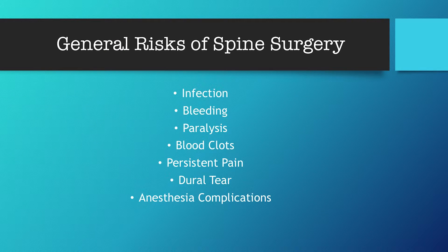First, the general risks of spine surgery. These risks are quoted within our office with Dr. Mather at usually less than a one percent chance. They include infection, bleeding, paralysis, blood clots, persistent pain, dural tear, and anesthesia complications. A dural tear is a nick in the spinal cord sack — almost like a water balloon. If punctured during surgery, we typically see it happen, fluid leaks out, and it is patched during the surgery. That would keep you overnight for monitoring. This is actually the highest risk on this list, but still probably less than one to two percent within our office.